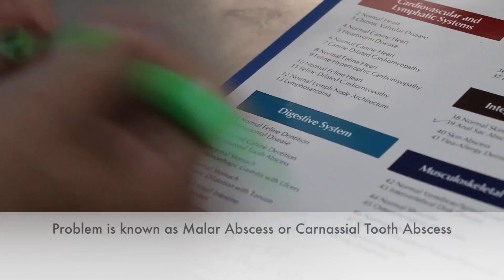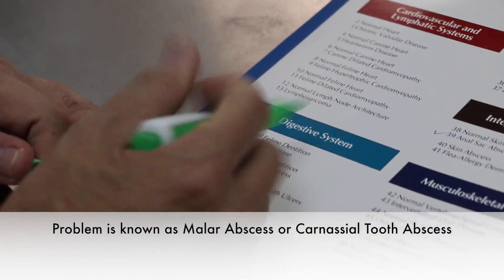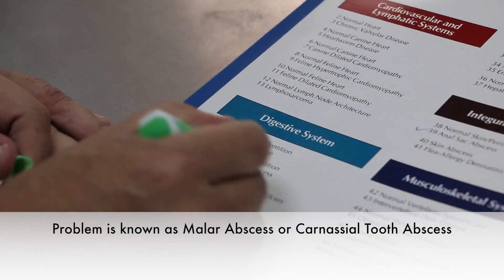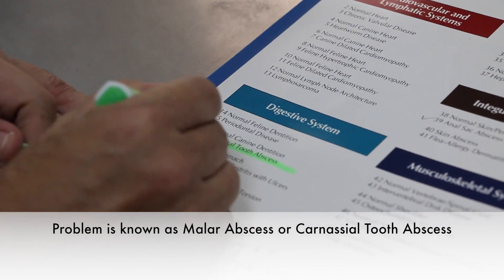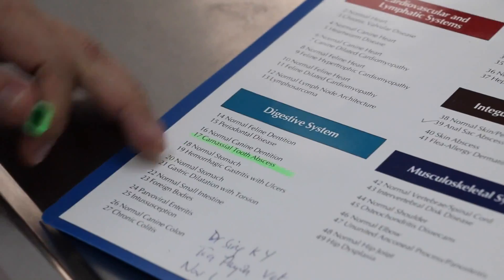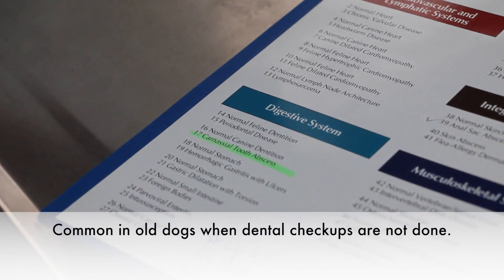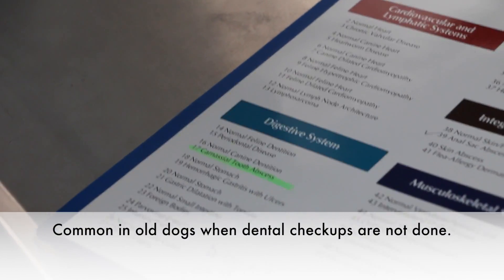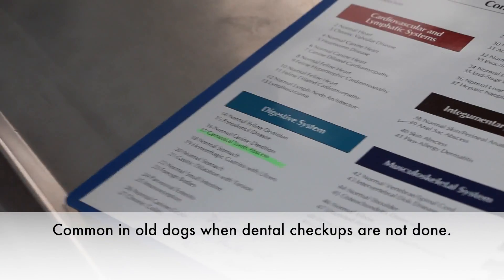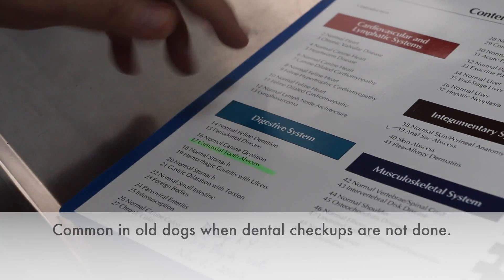A carnassial tooth abscess, also called Mala abscess, number 17, is very common in old dogs when they don't do dental scaling and they don't check the teeth.